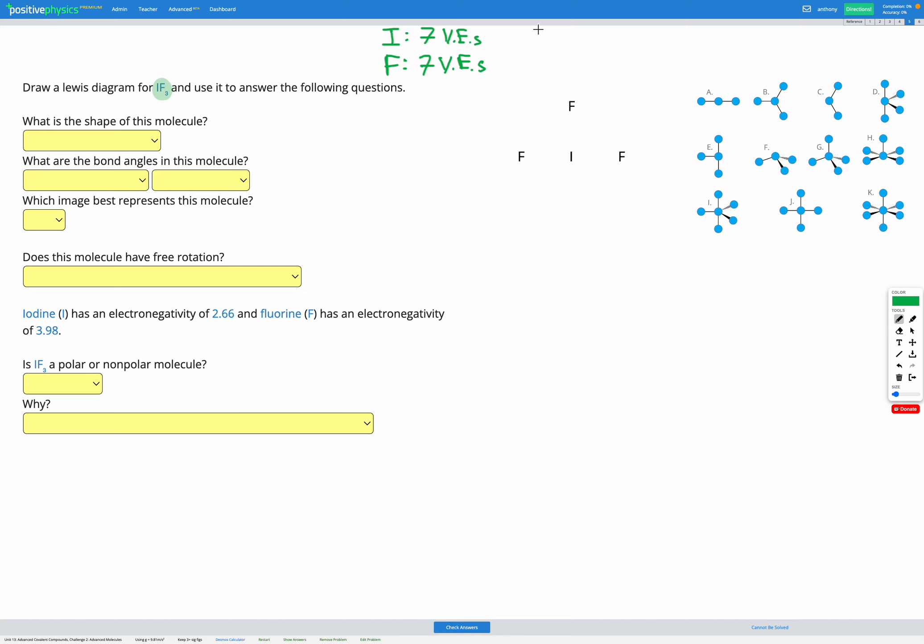On our diagram we've got 1 iodine and 3 fluorine. So that means we have one set of 7 valence electrons plus 3 more sets of 7 valence electrons. That gives us a total of 28 valence electrons.